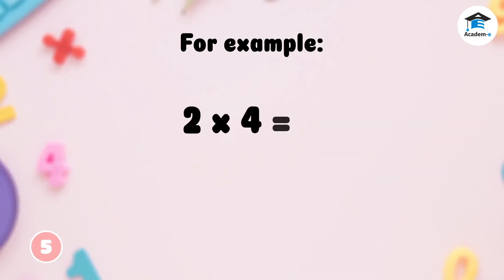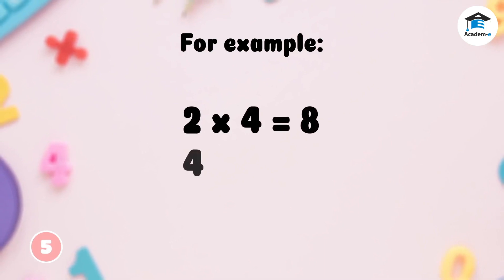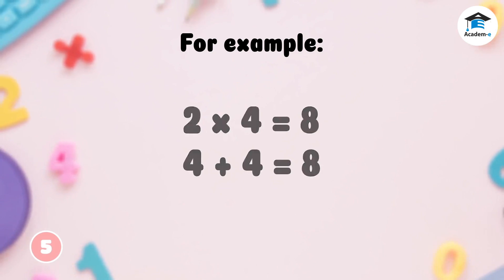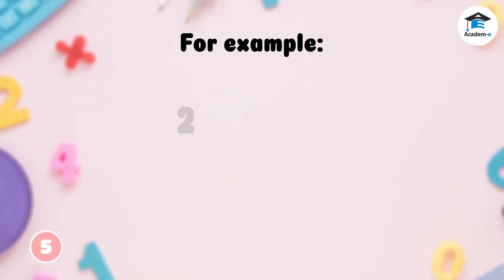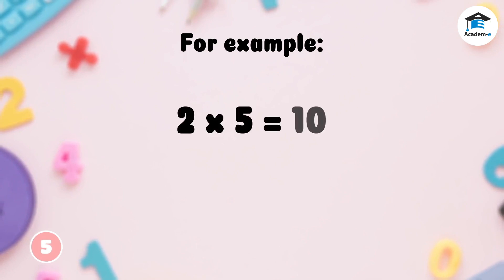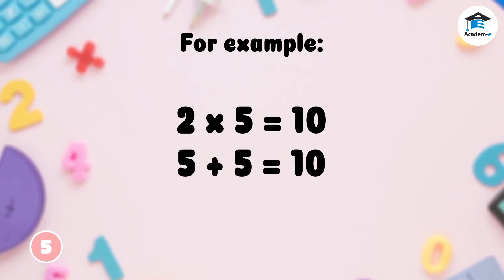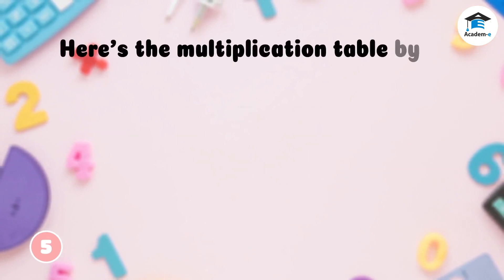Next example: 2 times 4 is equal to 8; let's add 4 by itself, so 4 plus 4 equals 8. Last example: 2 times 5 is equal to 10; let's add 5 by itself, so 5 plus 5 equals 10. Here's the multiplication table by 2.